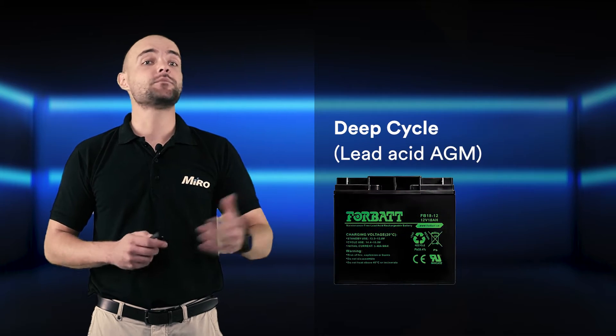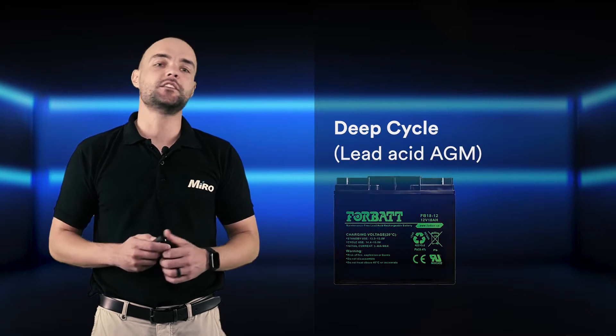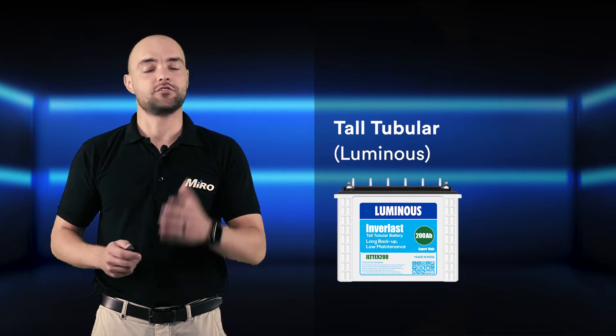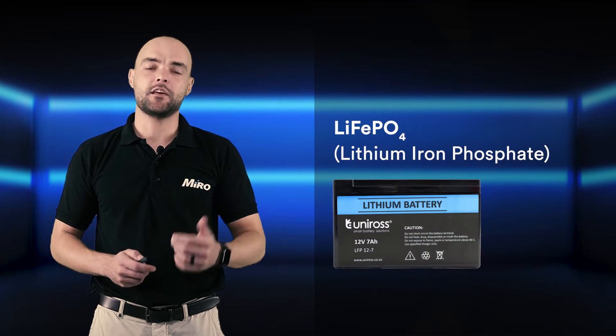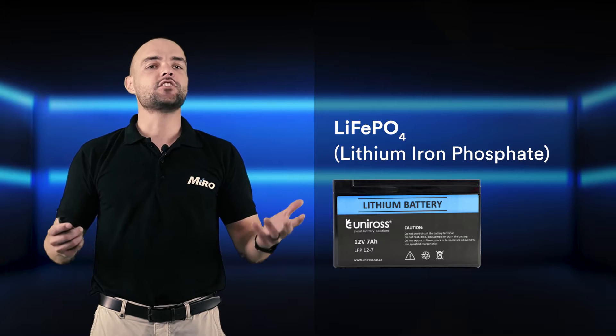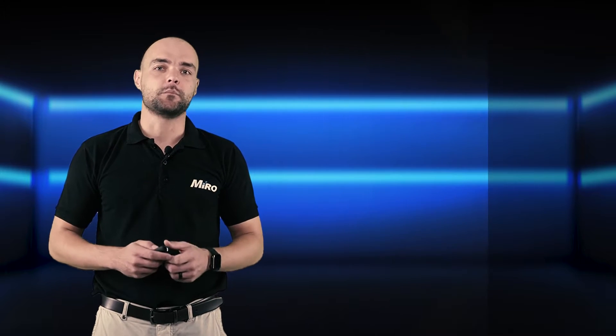The three main battery technologies we will look at are deep cycle lead acid such as AGM, our Luminous tall tubular battery which is also lead acid, and lithium-ion phosphate. Let's start by understanding some key concepts when dealing with batteries.